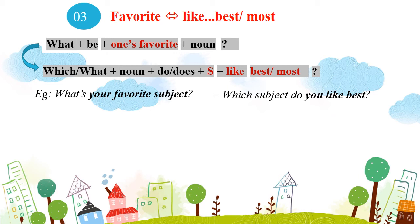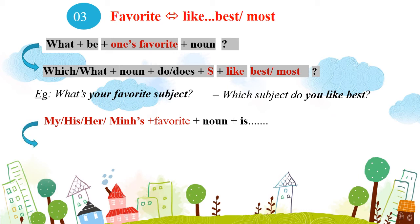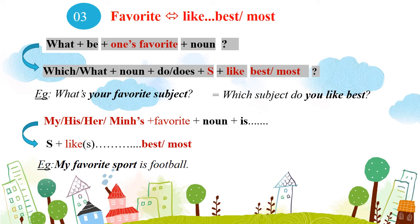Để trả lời cho hai cách trên: Cách thứ nhất dùng: My/His/Her + favorite + noun + is + ... Cách thứ hai: Subject + like/likes + best/most (nếu chủ ngữ là ngôi thứ 3 số ít thì thêm S vào like). Ví dụ: "My favorite sport is football." – Thể thao yêu thích nhất của tôi là bóng đá. Viết lại: "I like football best." – Tôi thích bóng đá nhất.